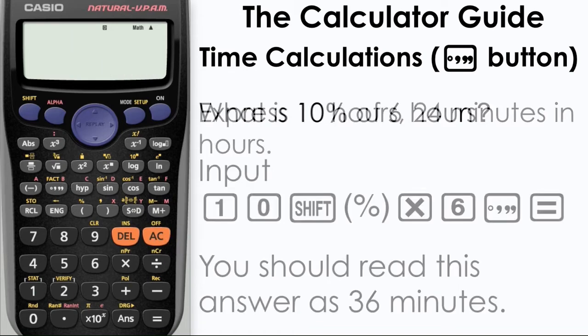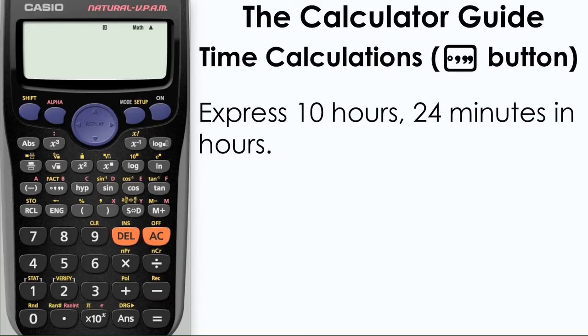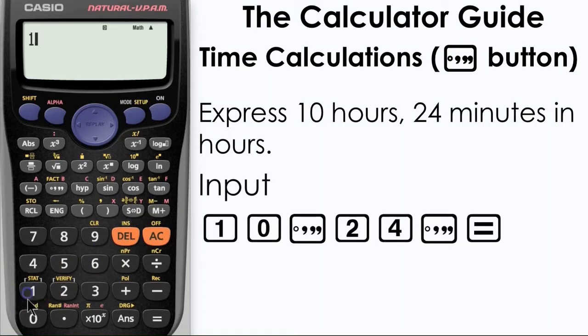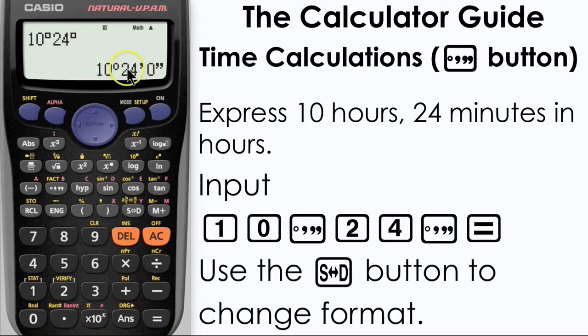We're now going to use the calculator to express 10 hours 24 minutes in hours. Input 10 and then press the degrees minutes and seconds button, 24, and then press the degrees minutes and seconds button again and then equals. This separates out the hours and minutes.